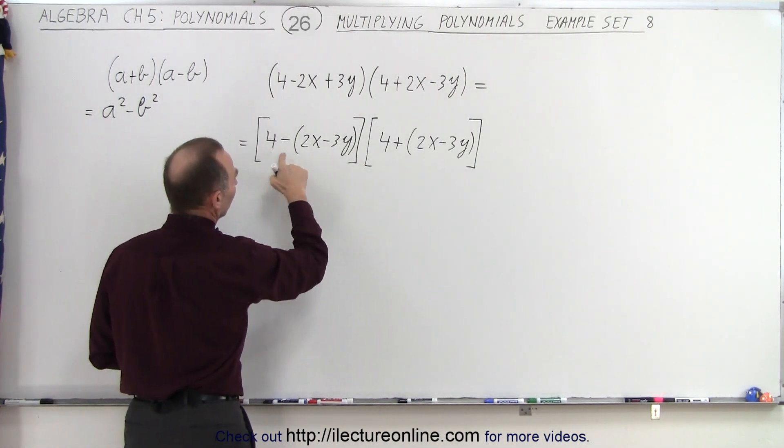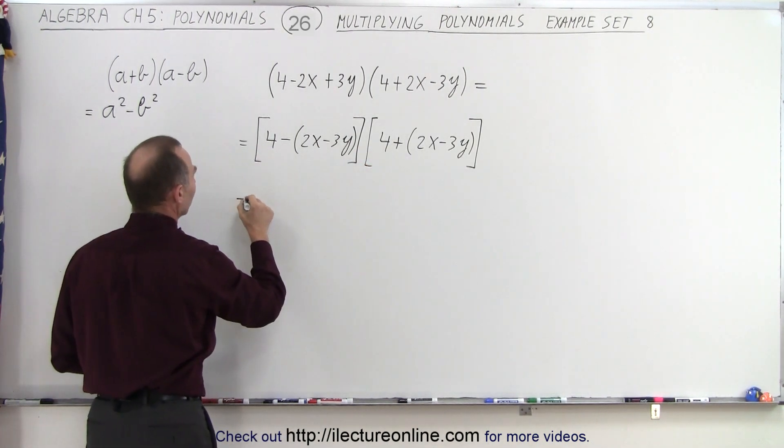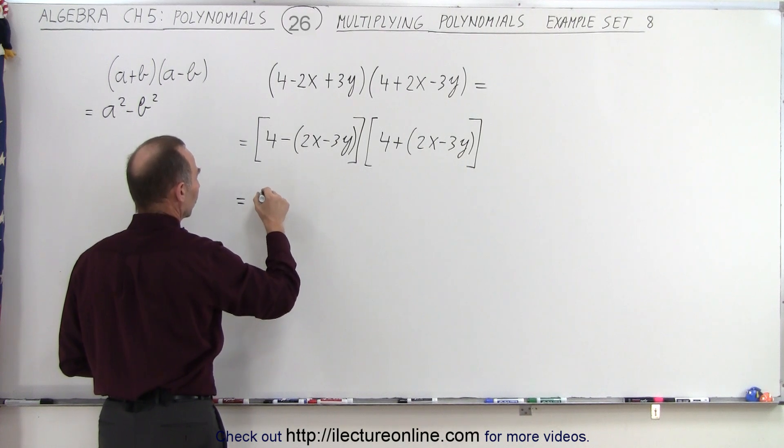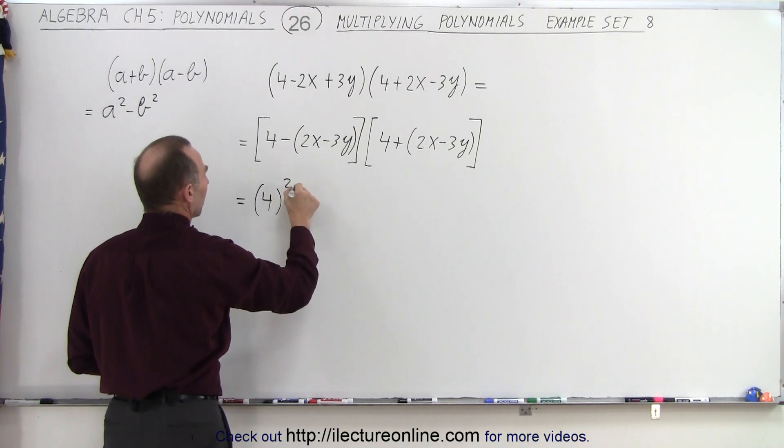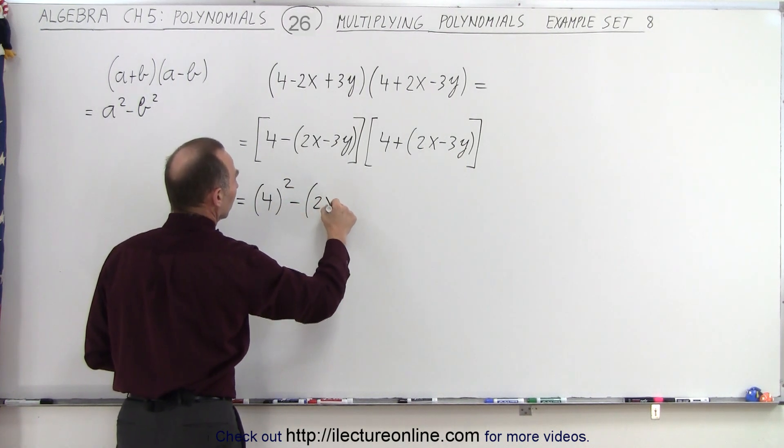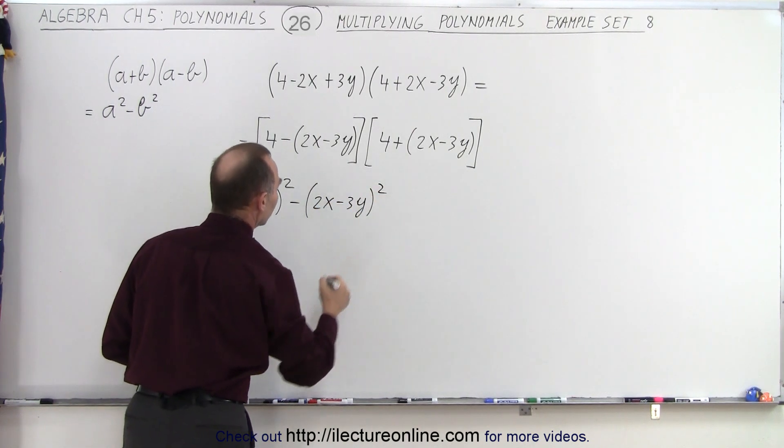If we consider this the first term and this the second term, then we can say that this equals the first term squared minus the second term squared, like this.